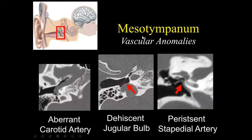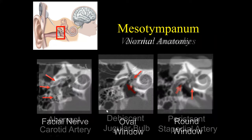Other vascular anomalies in the mesotympanum also need to be commented on. This includes an aberrant carotid artery, a high-riding jugular bulb, and a persistent stapedial artery. The persistent stapedial artery presents as a soft tissue mass at the oval window opening, classically running between the two crura of the stapes. Since surgeons approach from outside in with no way to assess these structures, it is truly our job to report these vascular anomalies — this is where we add significant value.